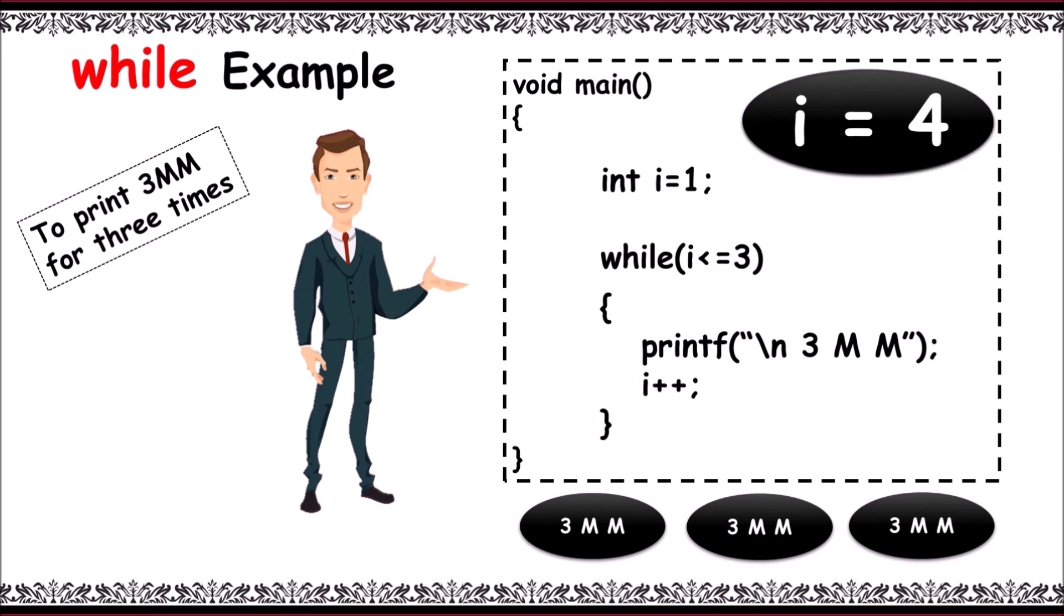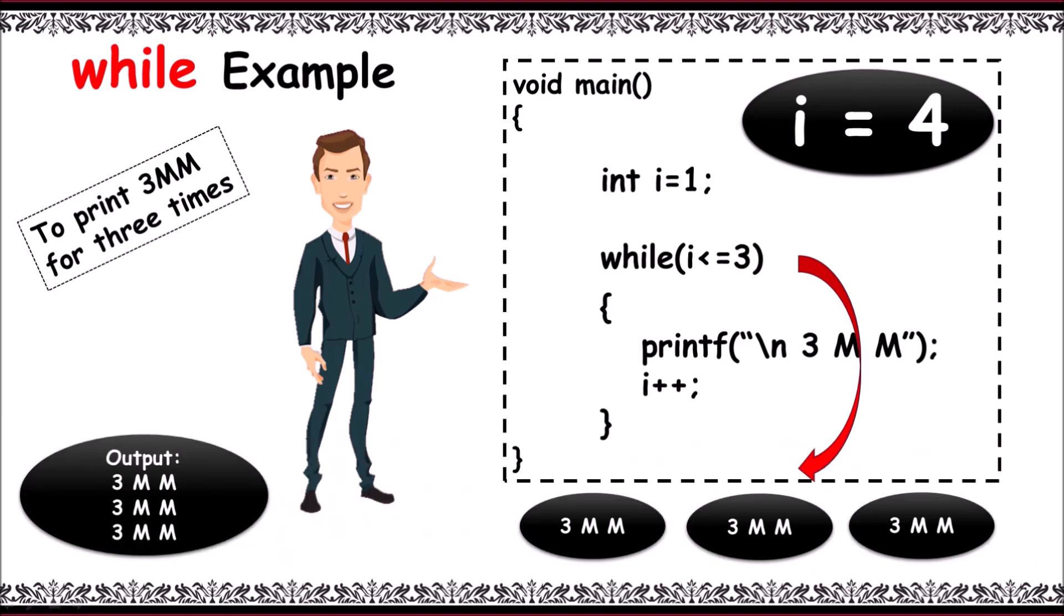Here the control again evaluates the condition: i less than or equal to 3, that is 4 less than or equal to 3. As it returns false, now the control comes out of the block, that is out of the loop. And you can see the output with 3mm printed.